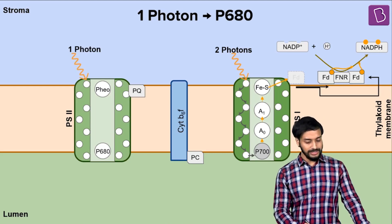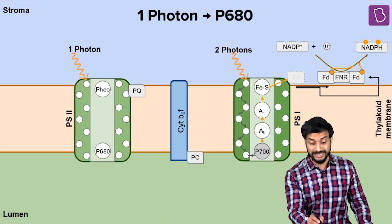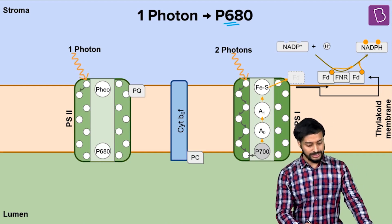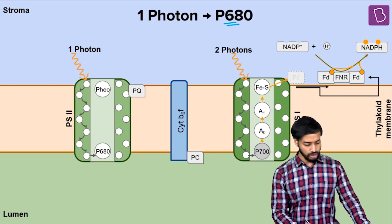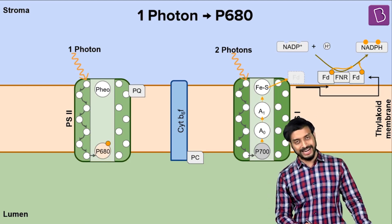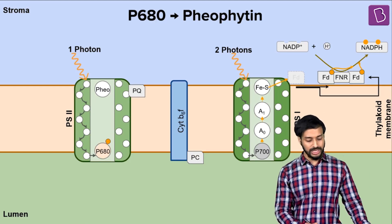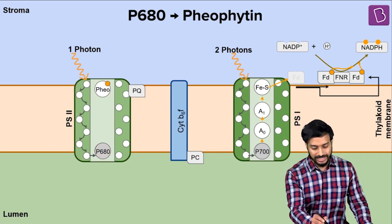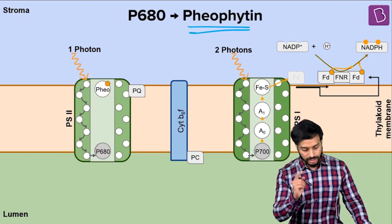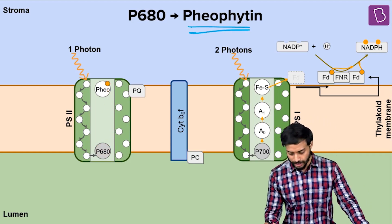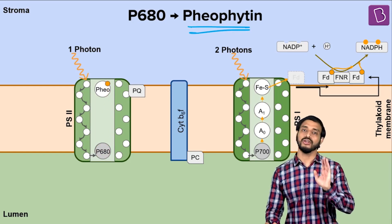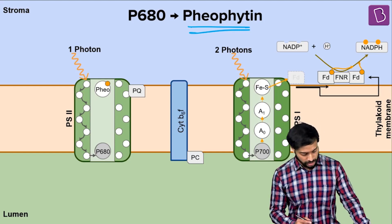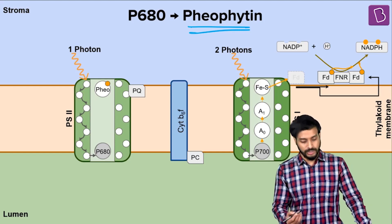In Photosystem 2, we are talking about P680. One photon arrives, the energy is passed on to the reaction center, it gets excited, and the electron is transferred to pheophytin. Pheophytin will be at a higher redox potential — higher affinity for the electron — so of course the electron will be transferred to pheophytin.